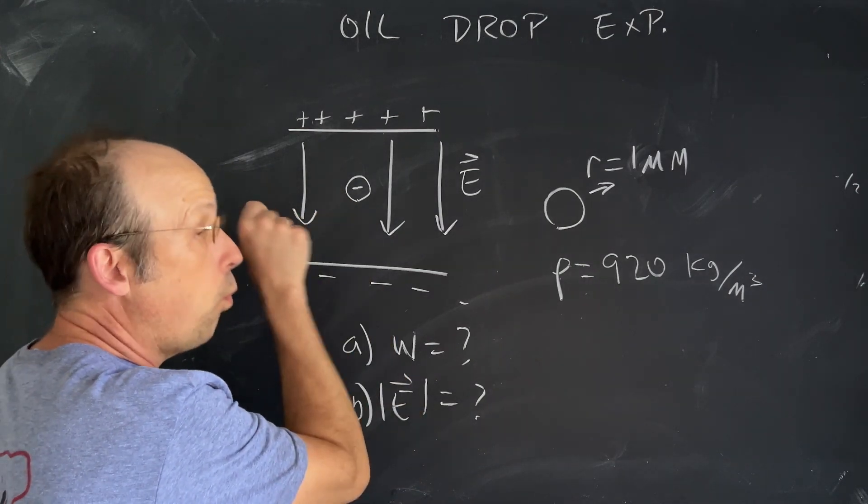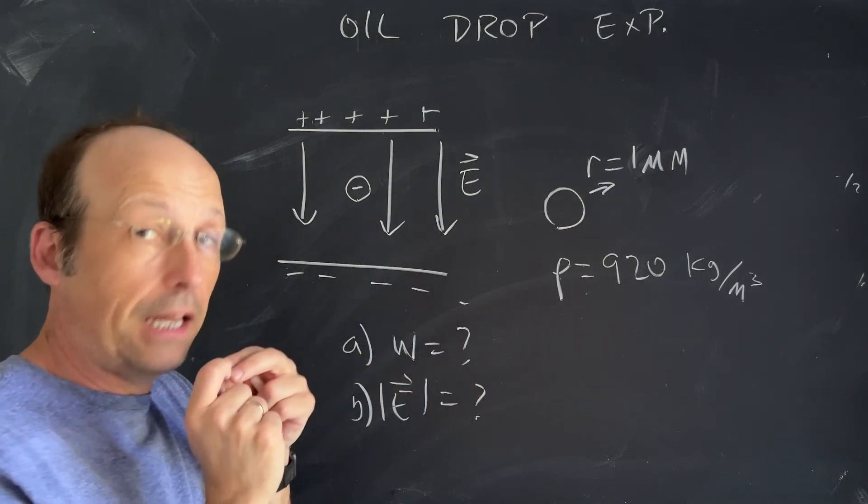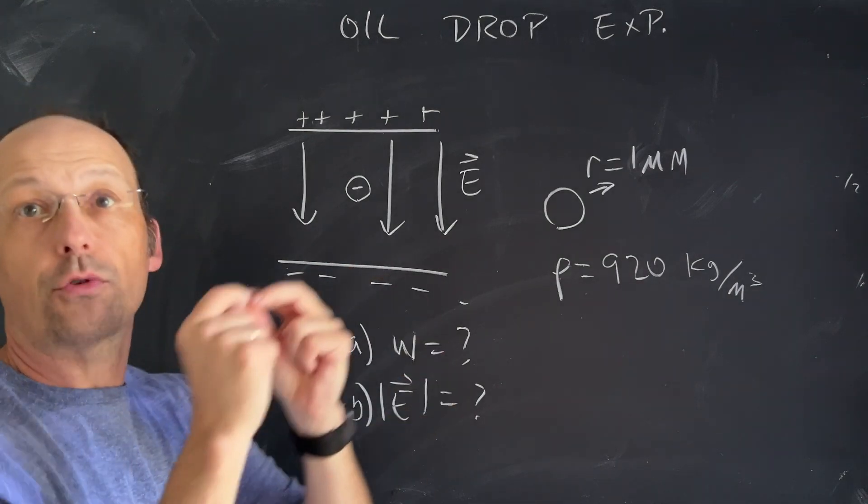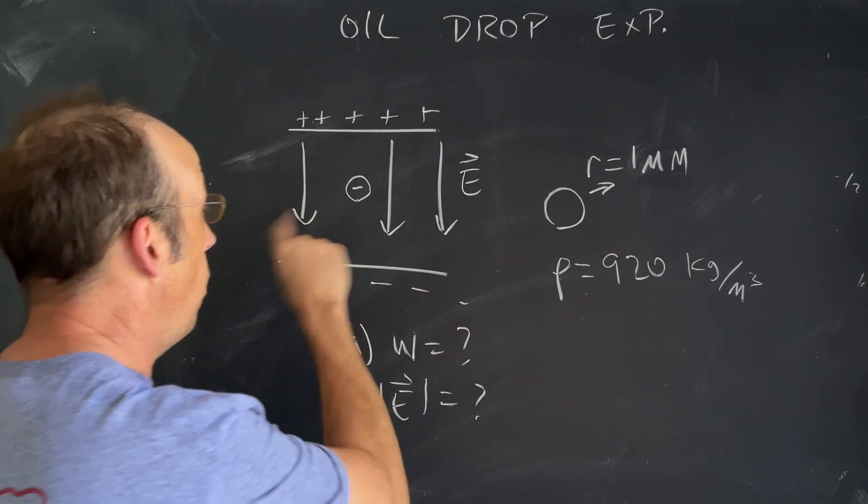When the drop got squirted it was possible that it could accumulate an extra electron or two electrons or three electrons, but let's assume it gets one extra electron.